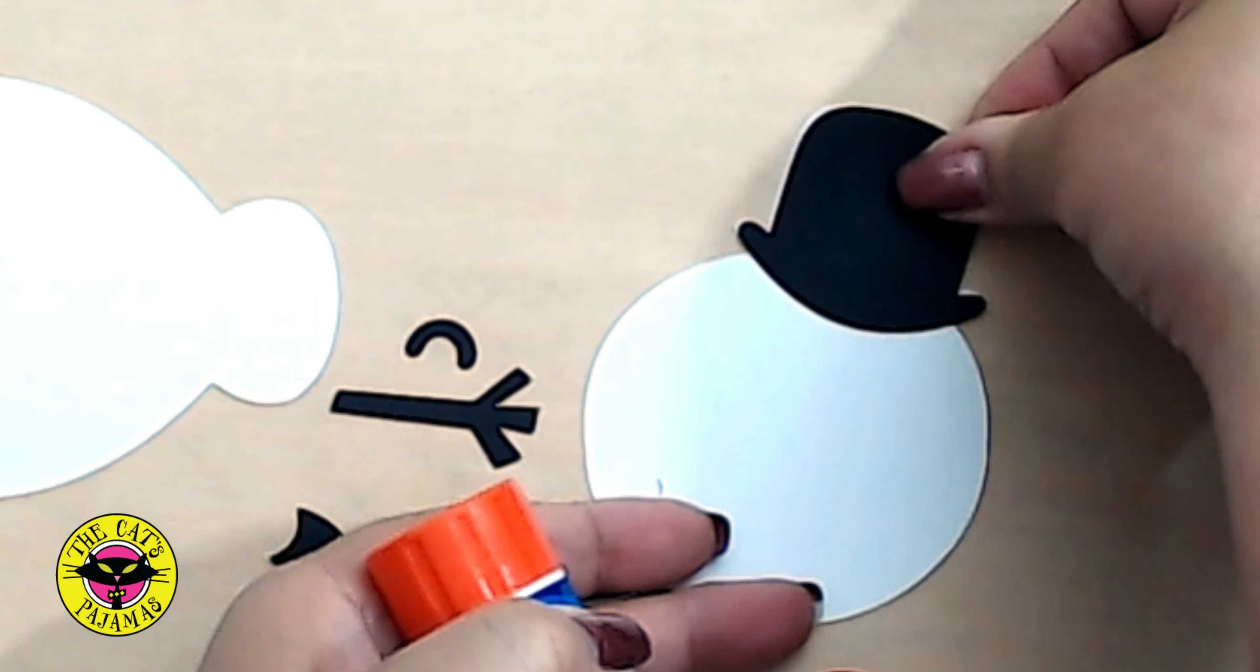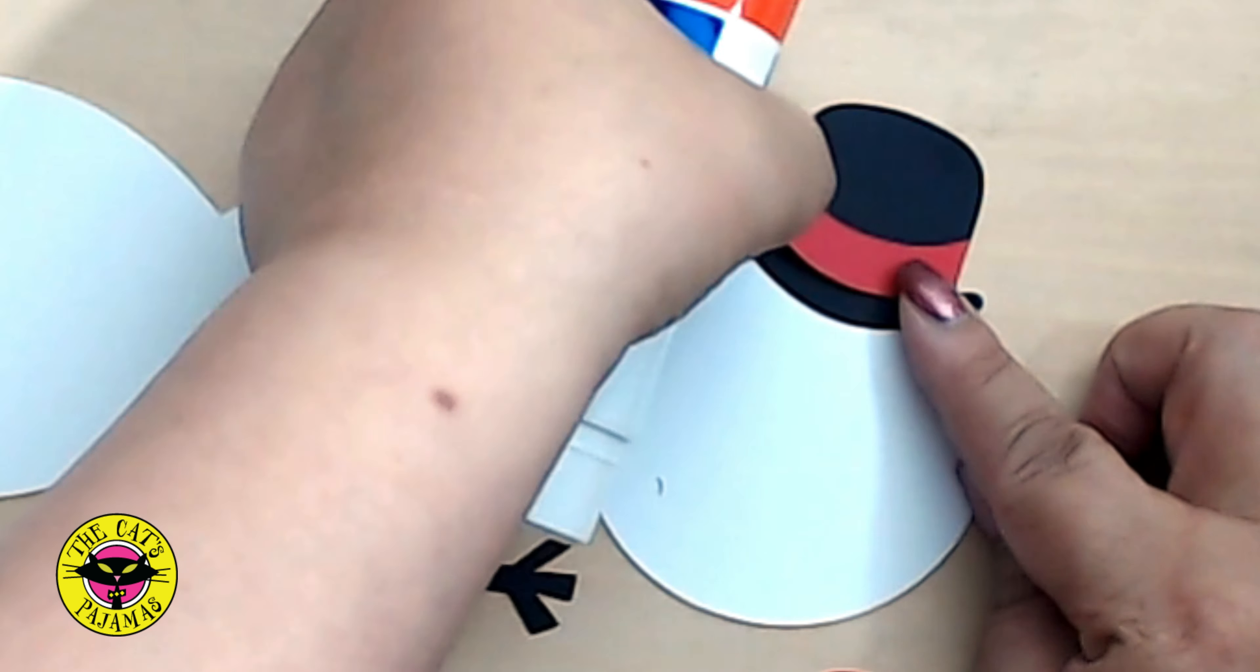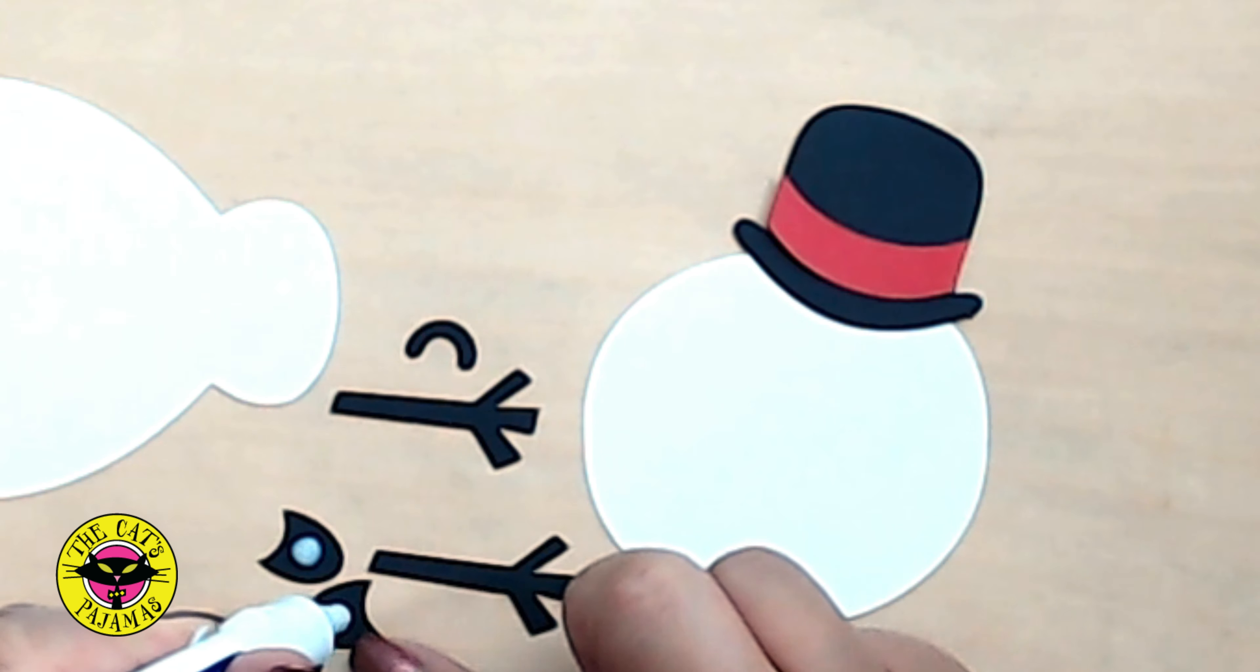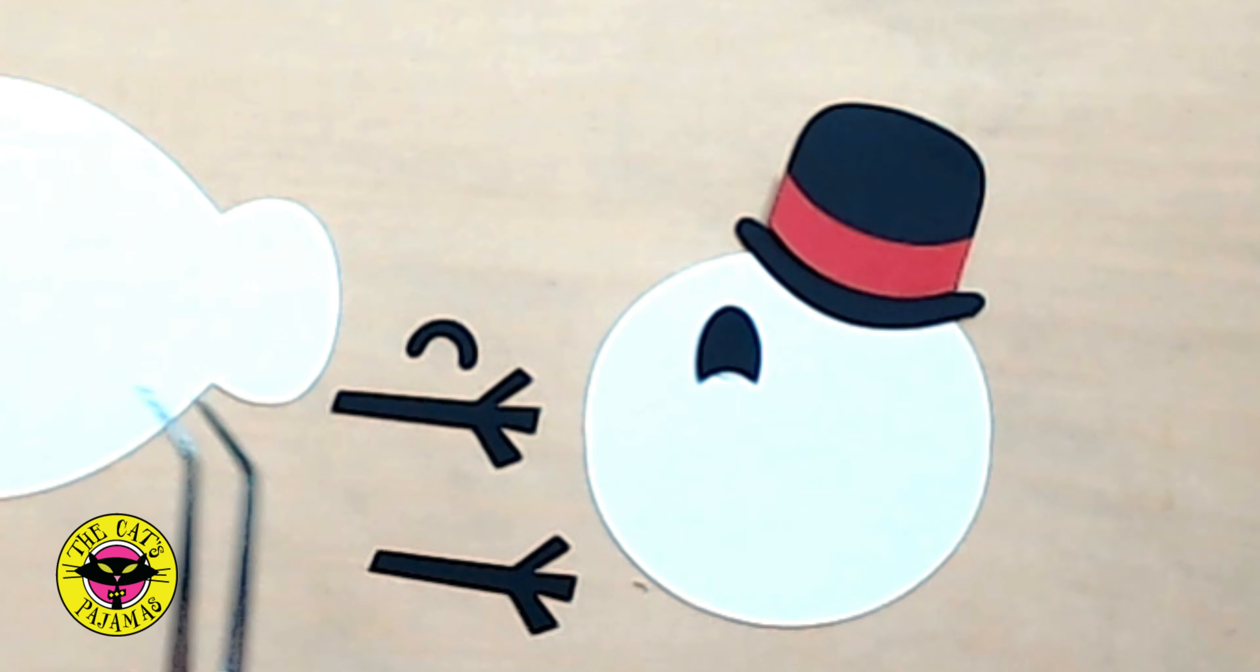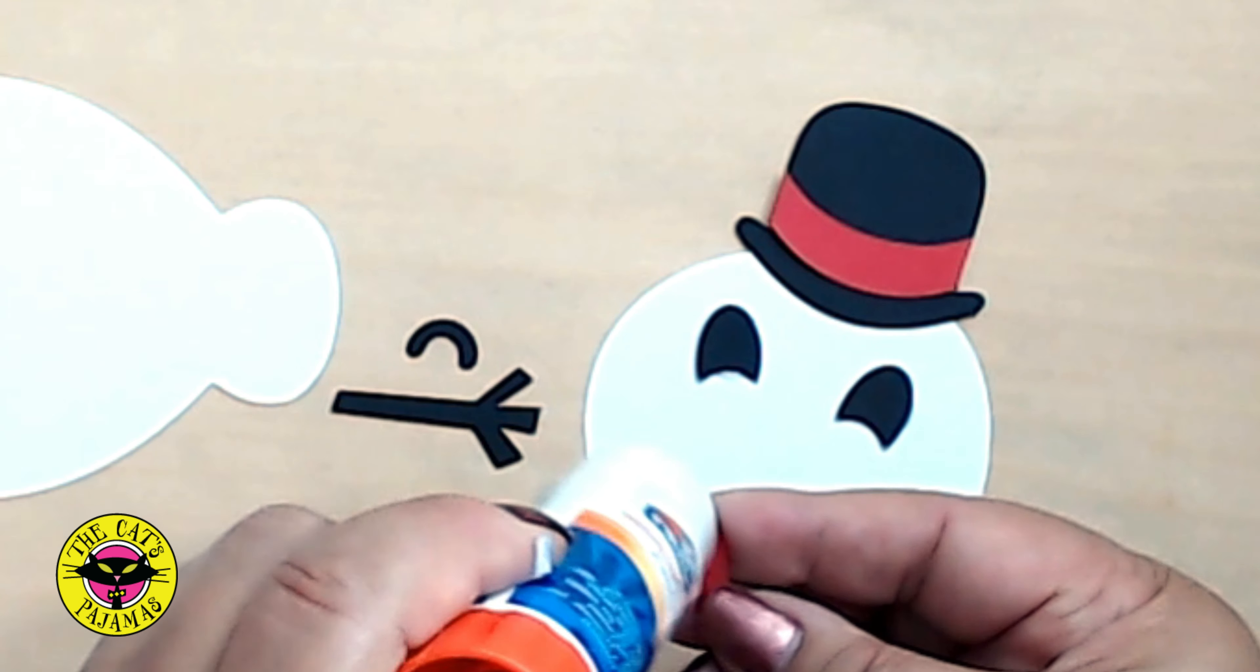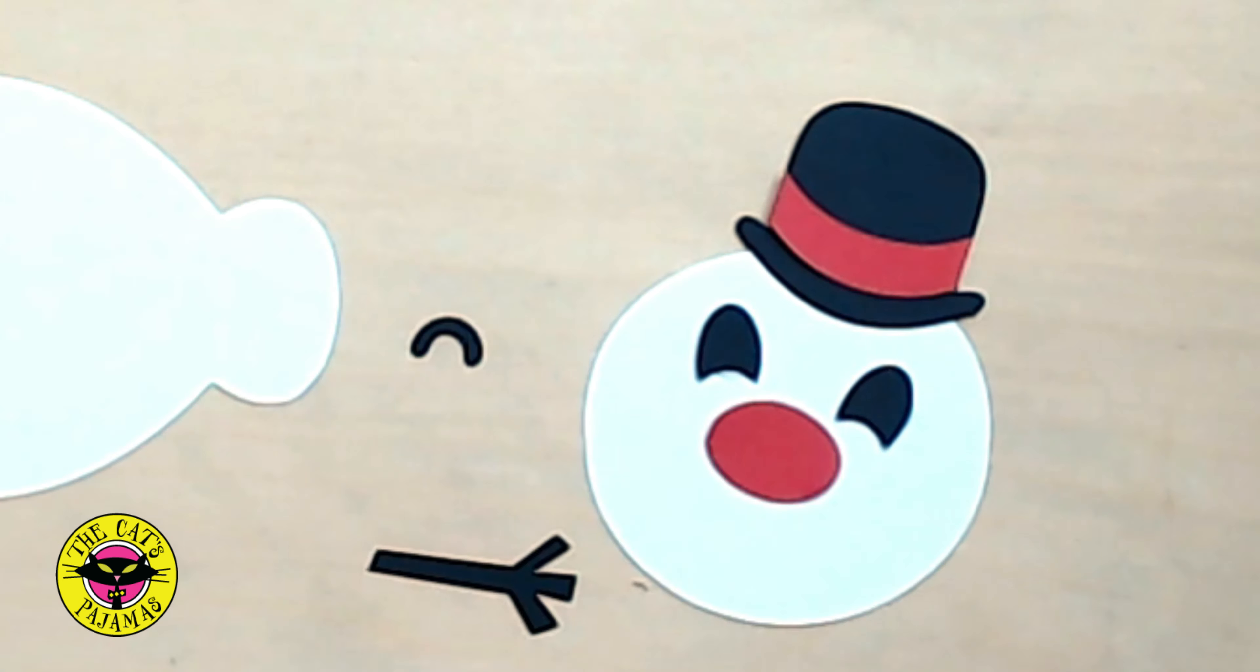Start at the top and attach the hat to the snowman and then the band to the hat. Now for the eyes. I'm using white glue to attach the eyes and I'm placing them in with tweezers. Now the nose and the smile.